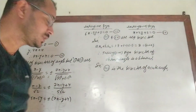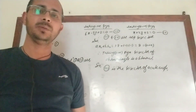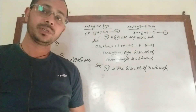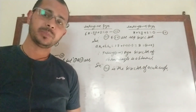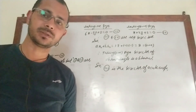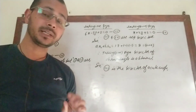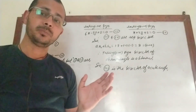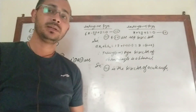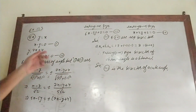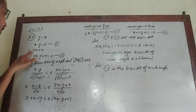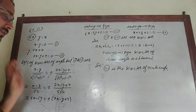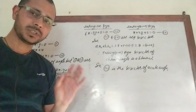Question number 5a: two straight lines are given. Find the bisectors of the angles between them and determine which bisector corresponds to the acute angle and which to the obtuse angle. The given equations are: y = x (i.e., x − y = 0) and 7x − y + 4 = 0. Remember to keep the constant positive; here the constant is 4, so it stays positive.